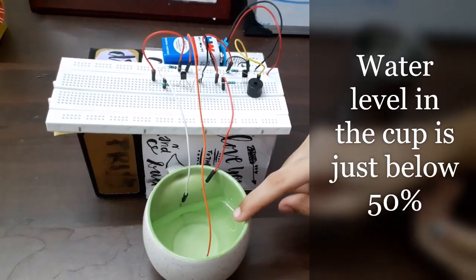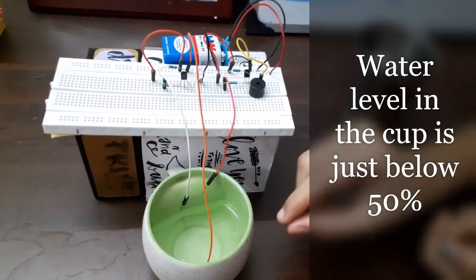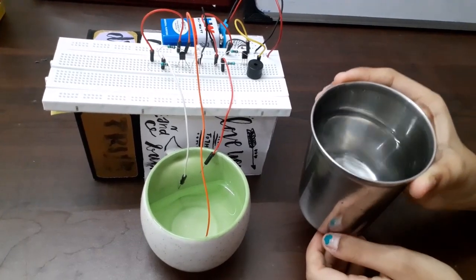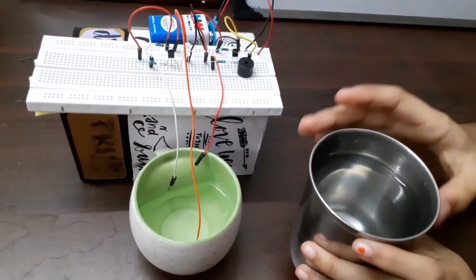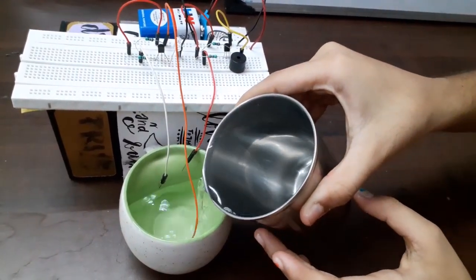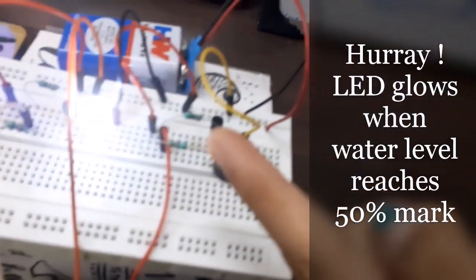Now the water level in the cup is just below 50 percent. When I pour a little water it will reach 50 percent. Now I will start pouring the water and let's see if the LED glows or not. So I'm adding little water. And you can see the LED glows.